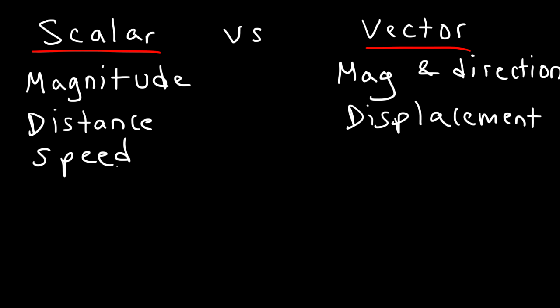Now let's say if a car is moving at 40 miles per hour north. Now we have speed with direction. That is known as velocity. So velocity is a vector, but speed is a scalar quantity.